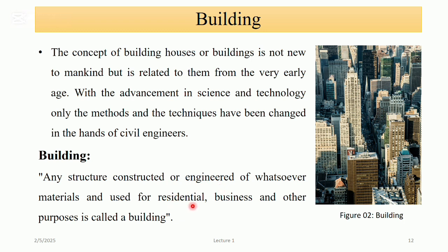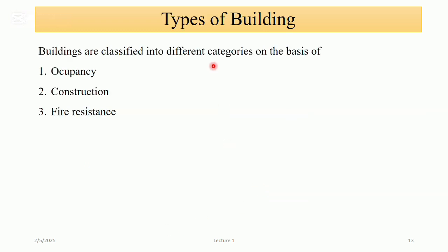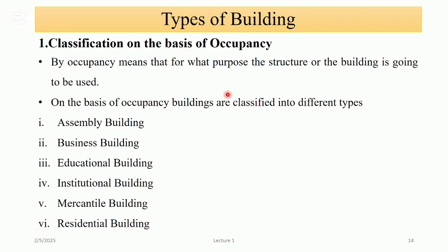Let's describe buildings: any structure constructed of whatsoever material and used for residential, business, and other purposes is called a building. Buildings are classified into different categories on the basis of occupancy, construction, and fire resistance. By occupancy, we mean for what purpose the structure or building is going to be used. On the basis of occupancy, buildings are classified into types such as assembly buildings, business buildings, educational buildings, institutional buildings, mercantile buildings, and residential buildings.